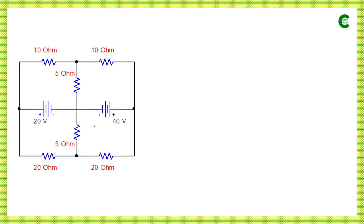Before applying Kirchhoff's voltage law or mesh analysis, we need to identify how many meshes or loops there are in this circuit. We can identify that we have four individual loops. In the next step, we need to assume some loop currents for all those loops.